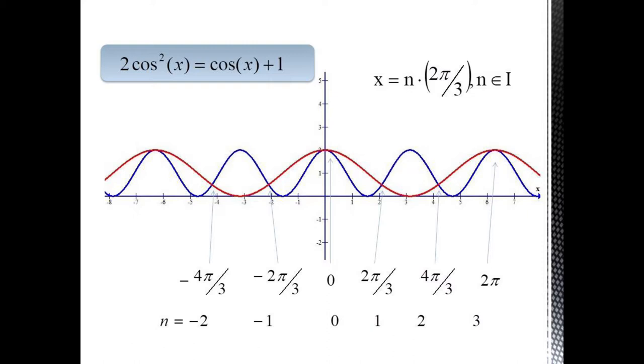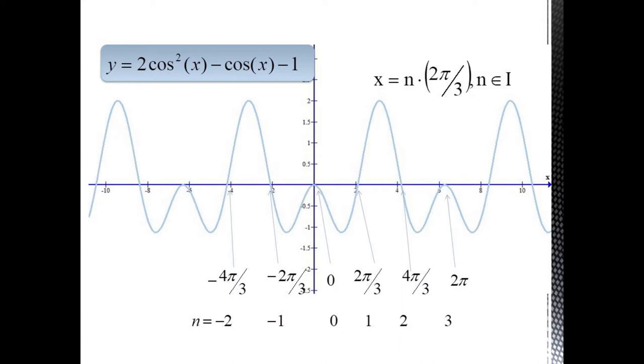That is, every multiple of 2 pi over 3, our graphs intersect. Or equivalently, we could have moved everything to one side and considered finding all the zeros of the graph y equals 2 cosine squared x minus cosine x minus 1.